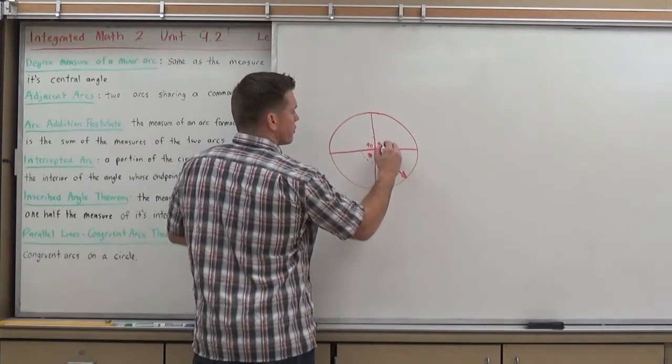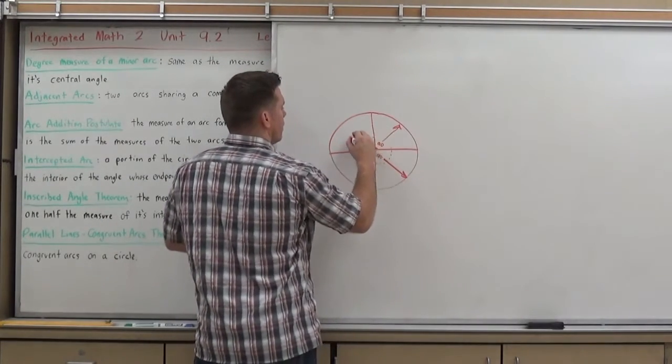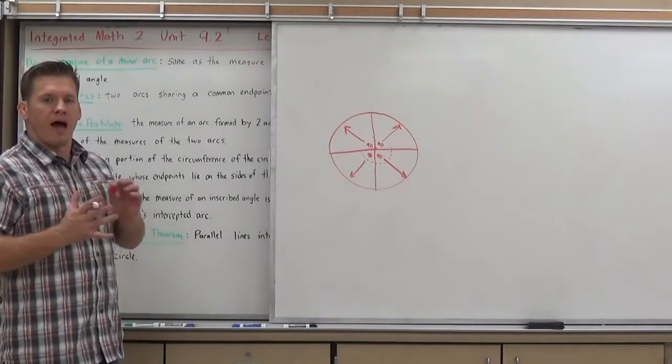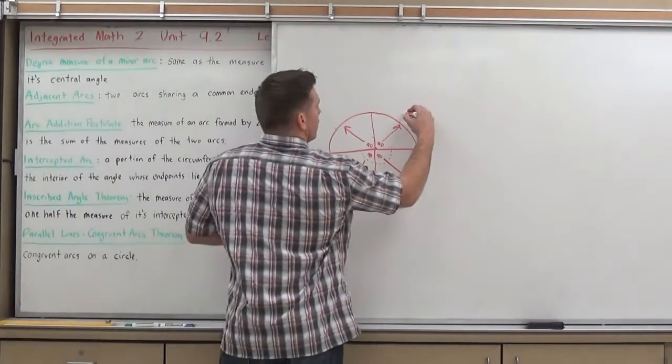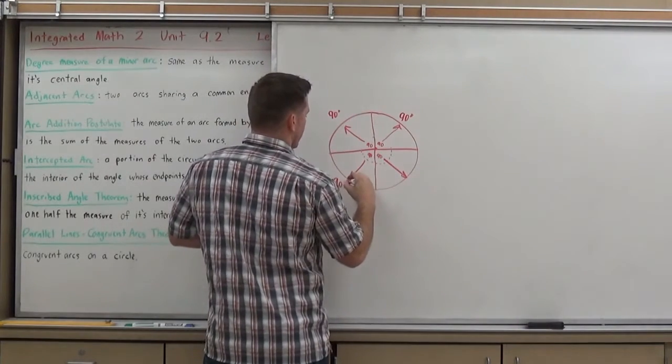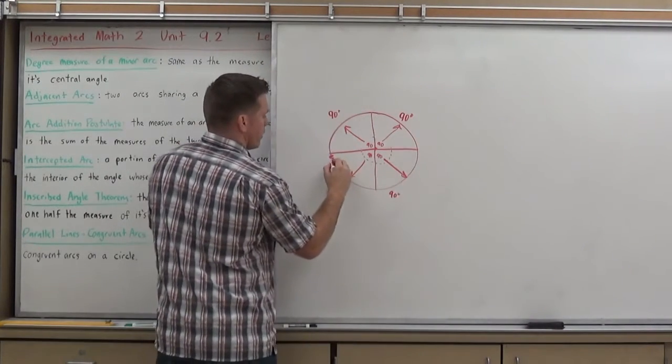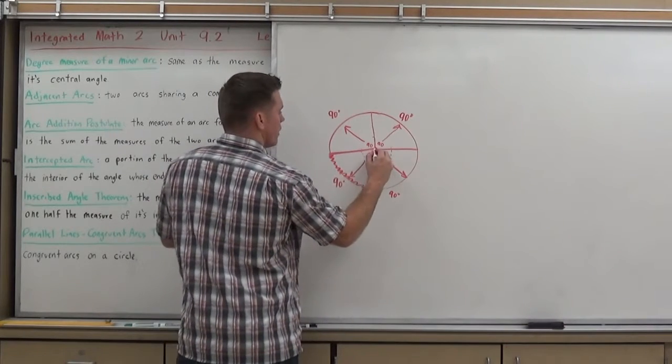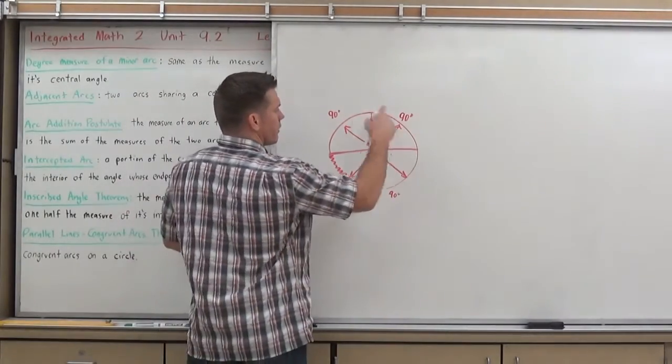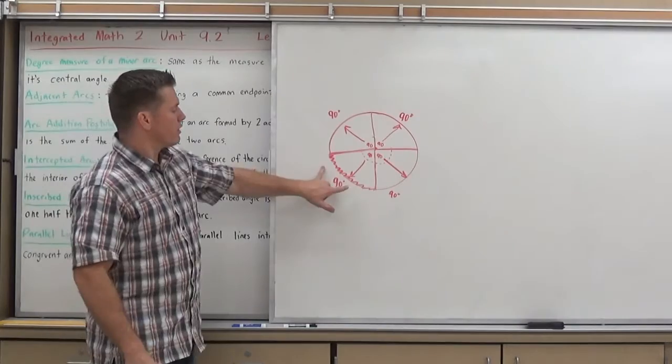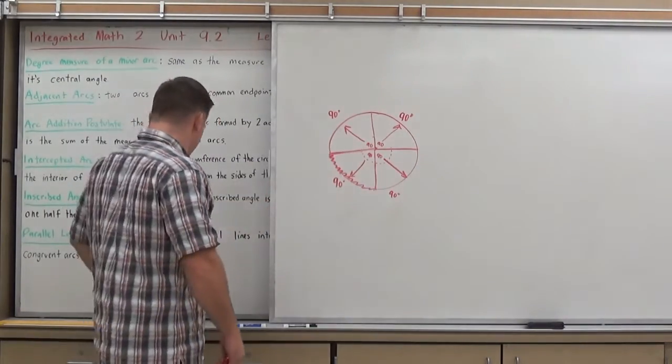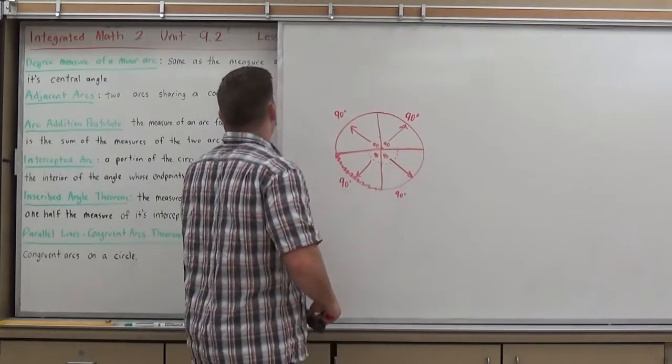And so when we talk about degree measure of arcs, we're talking about basically what degree amount of the full 360 that arc consists of. And so the degree measure of arcs is always equal to its central angle. So this arc here is 90 degrees, it represents one fourth of the full circumference of the circle, and so you can always find the degree measure of an arc just by measuring its central angle. As long as you're going to the center of the circle, it will always be equal to that.